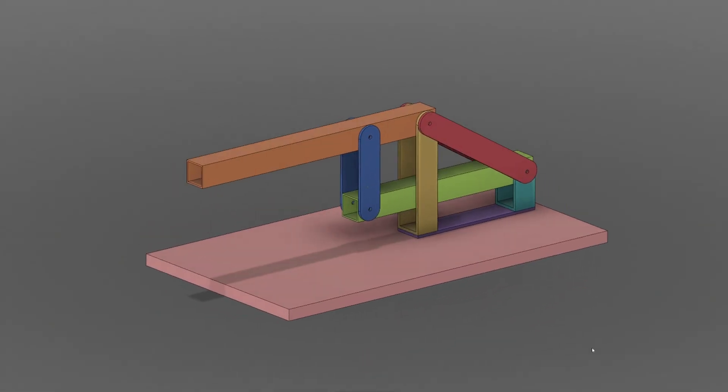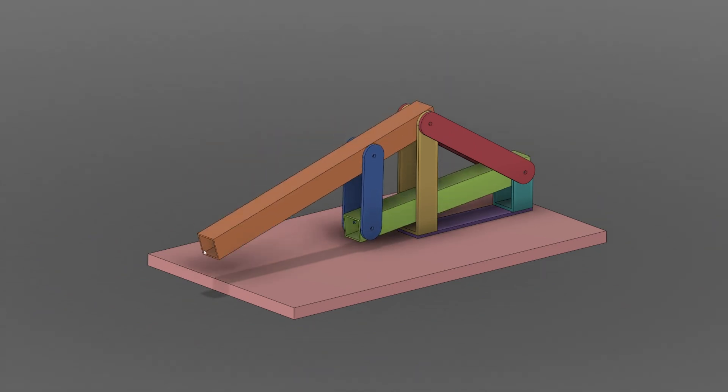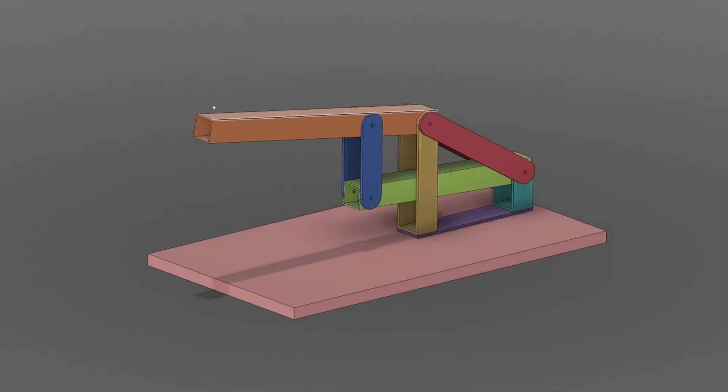First, I made a CAD model of the thing. This compound lever has a mechanical advantage of over 10 times. A nutcracker could maybe do a measly 2 times.